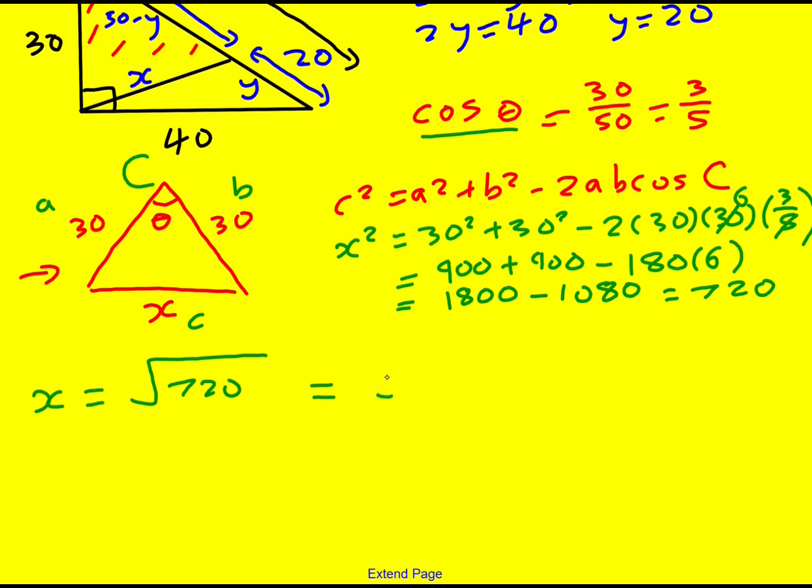So x is just going to be the square root of 720 and I need to simplify this. Well 9 goes into it. It's going to be root 9 times root 80. I'm just going to take square roots out a little bit at a time. Root 9, 16 goes into 80. 16 times 5 in fact. So this gives me 3 times 4 times root 5 or 12 root 5.